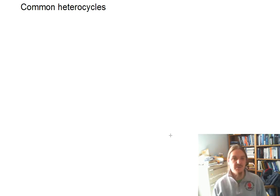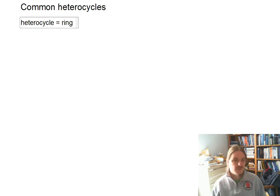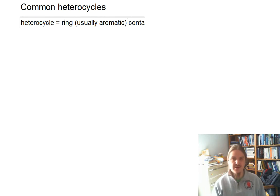Hello. In this video, I'm going to share with you the structures of some common heterocycles. A heterocycle is a ring, usually aromatic, containing atoms other than carbon and hydrogen.